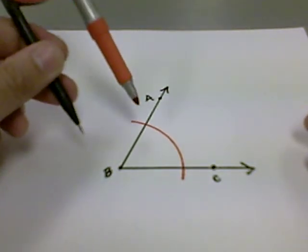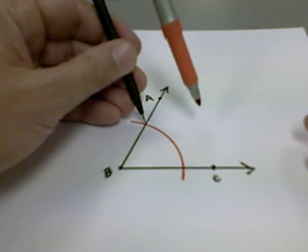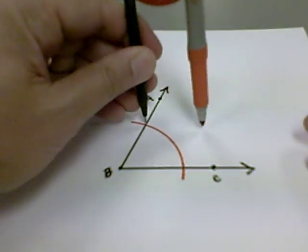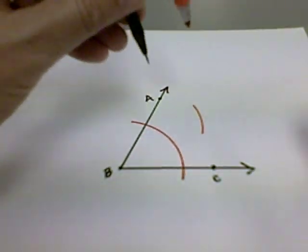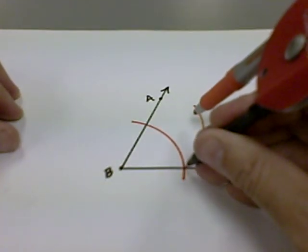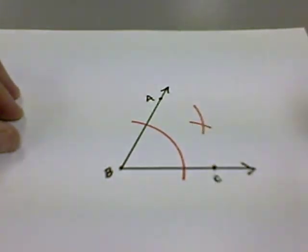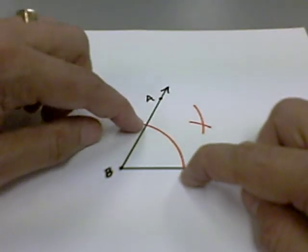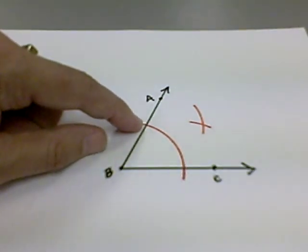From each of our intersection points, we're going to strike an arc, and that intersection point is equally distant from two points on the side of the angle.